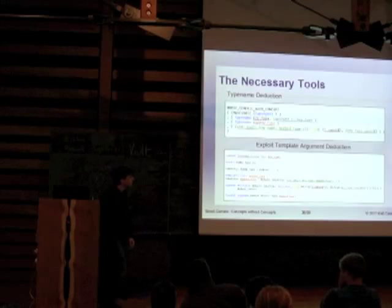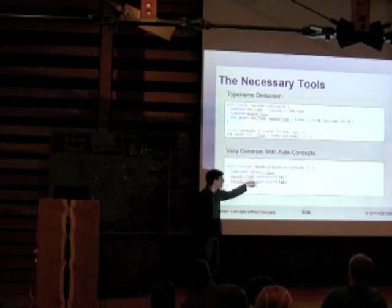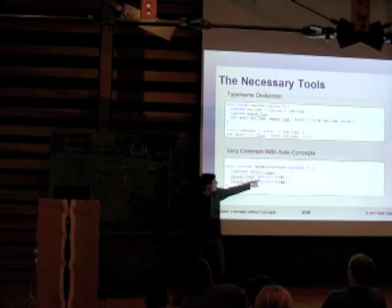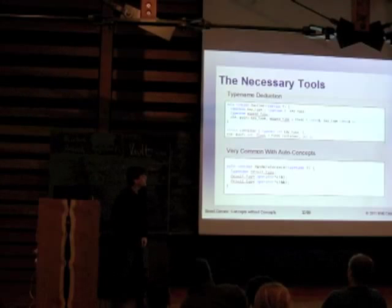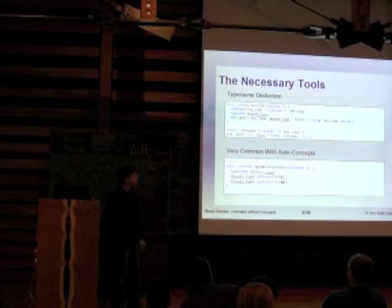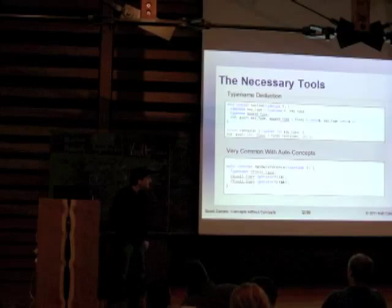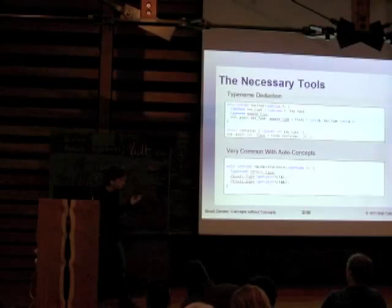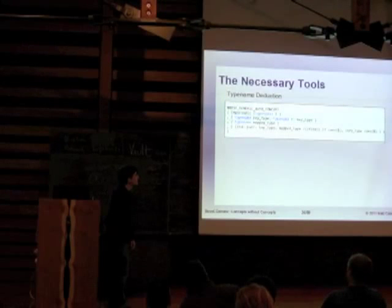There are also more rules. For instance, if you have two associated functions that both have result_type, and one overload returns something different from the other, they shouldn't match. So I have to test each of the associated functions — if they all return the same thing, there's no ambiguity and it's a match to the concept. If there is a difference, I abort and report an ambiguous deduction, and safely handle that situation.